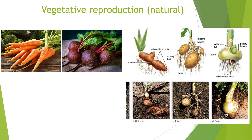Now, vegetative reproduction or vegetative propagation. Vegetative means any part of the plant other than the flower, because the flower is the sexual part. The other parts may be root, stem, or leaf. When these leaf, root, and stems are involved in the generation of a new individual, this kind of reproduction is known as vegetative propagation or vegetative reproduction.